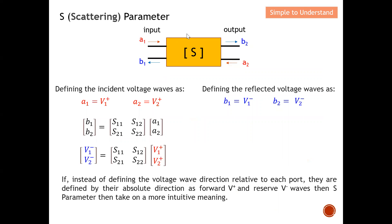Let me revisit what we discussed in the part one and part two series on S parameters. In part two, I introduced a1, b2, b1, and a2. In short, a1 represents all the incident waves, and b1 and b2 are all the reflected waves. Port one is at the input and port two is at the output. To make this notation more meaningful, I'm going to replace them: a1 becomes b1+, a2 becomes b2+, b1 becomes b1−, and b2 becomes b2−.